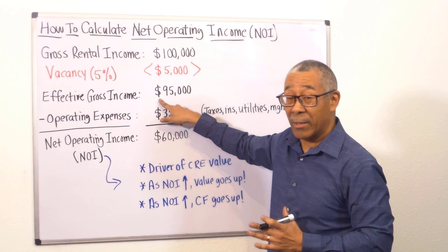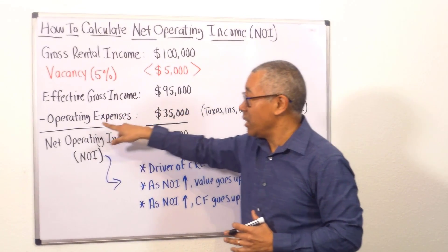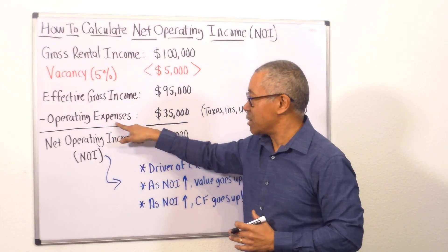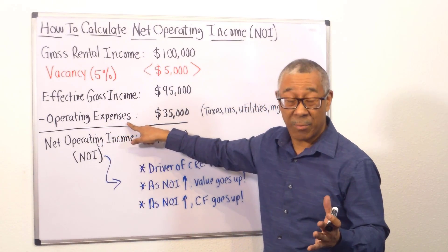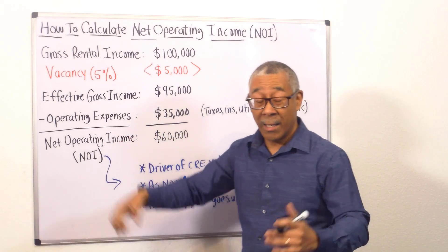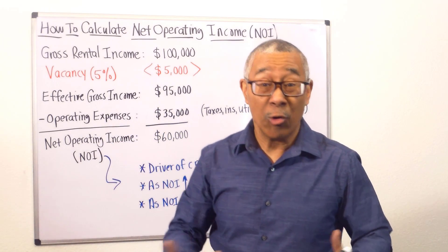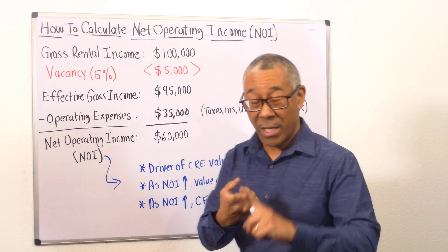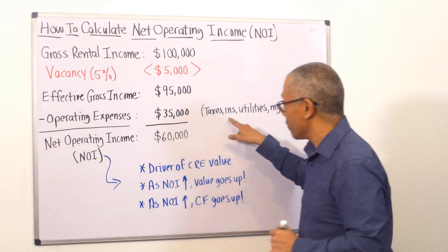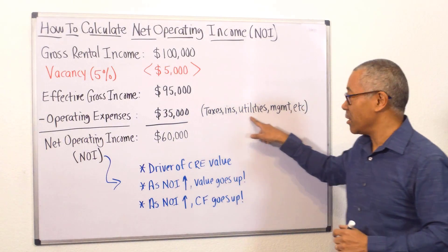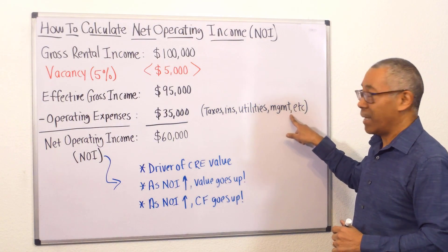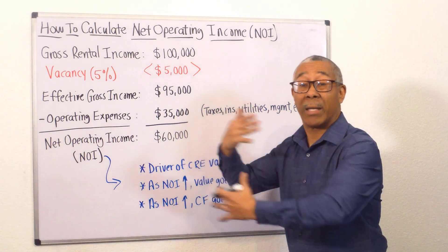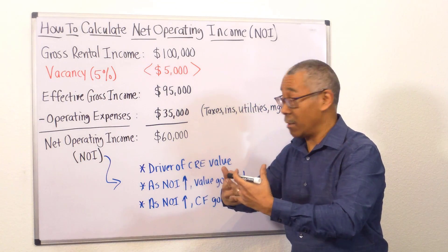Now, to get your NOI, you need to subtract from your EGI your operating expenses — not your mortgage, not roof replacement, not depreciation. These are taxes, insurance, utilities, management fees, et cetera. These are your normal and monthly recurring expenses.